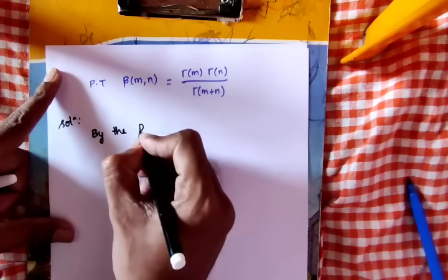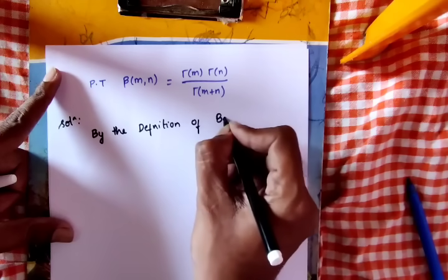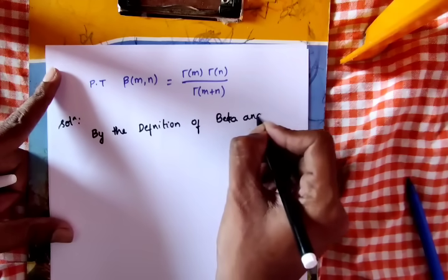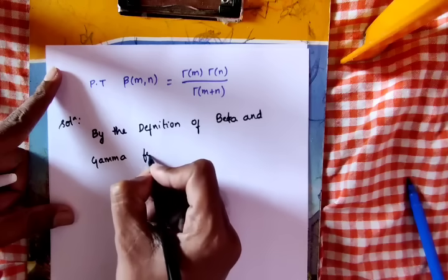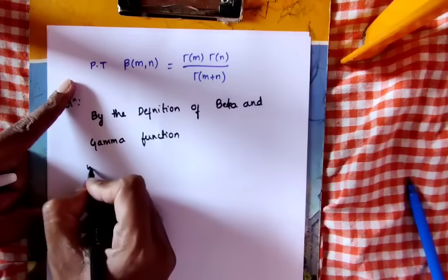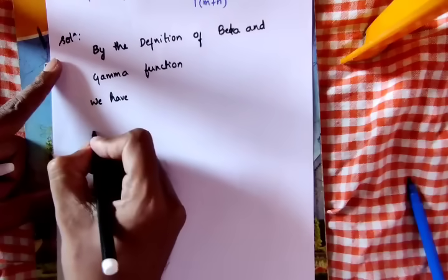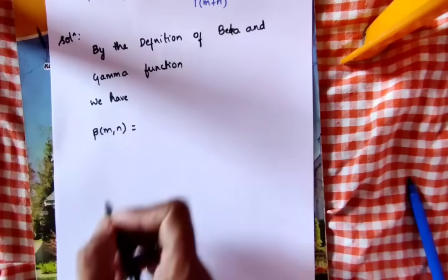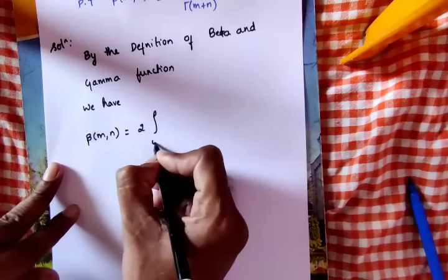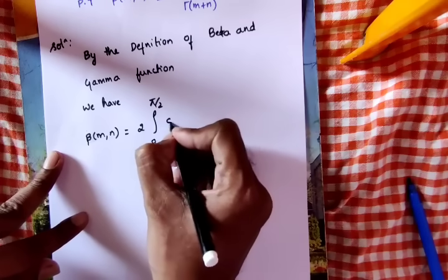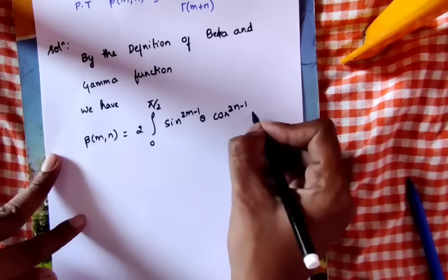By the definition of the beta function and gamma function, we have beta(m,n) is equal to 2 into integral from 0 to pi/2 of sine to the power (2m-1) theta, cosine to the power (2n-1) theta d theta.